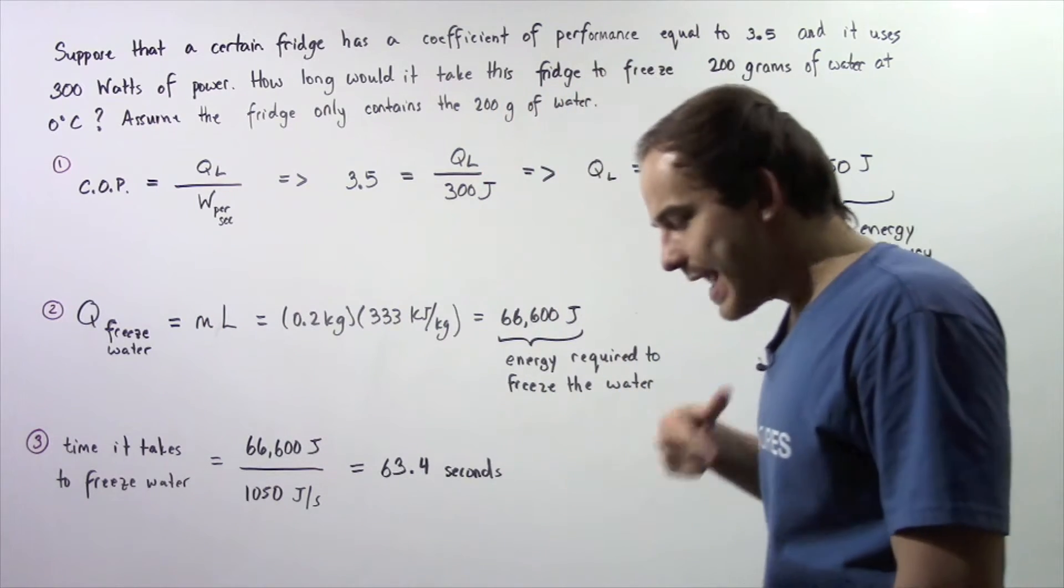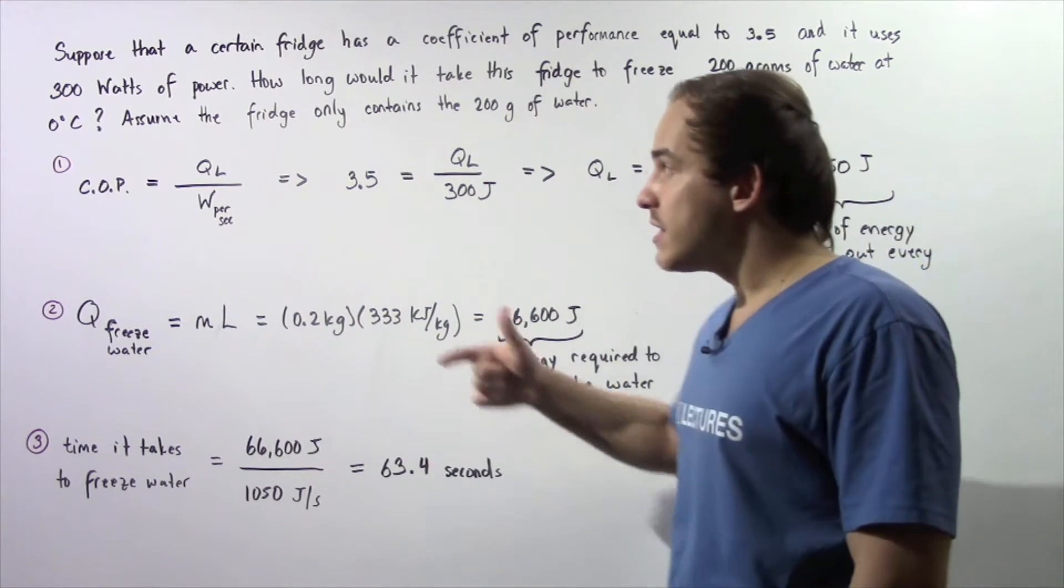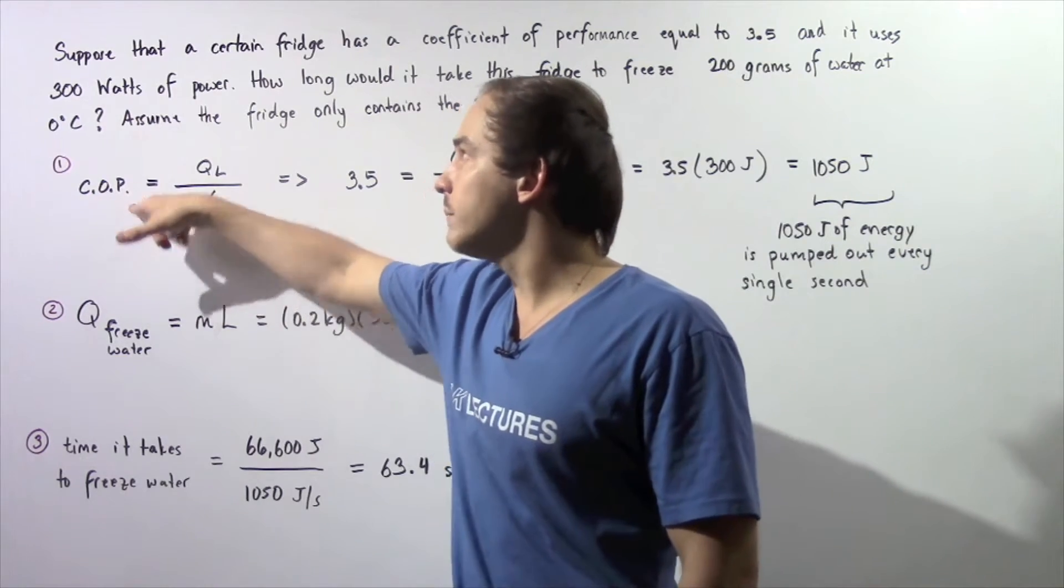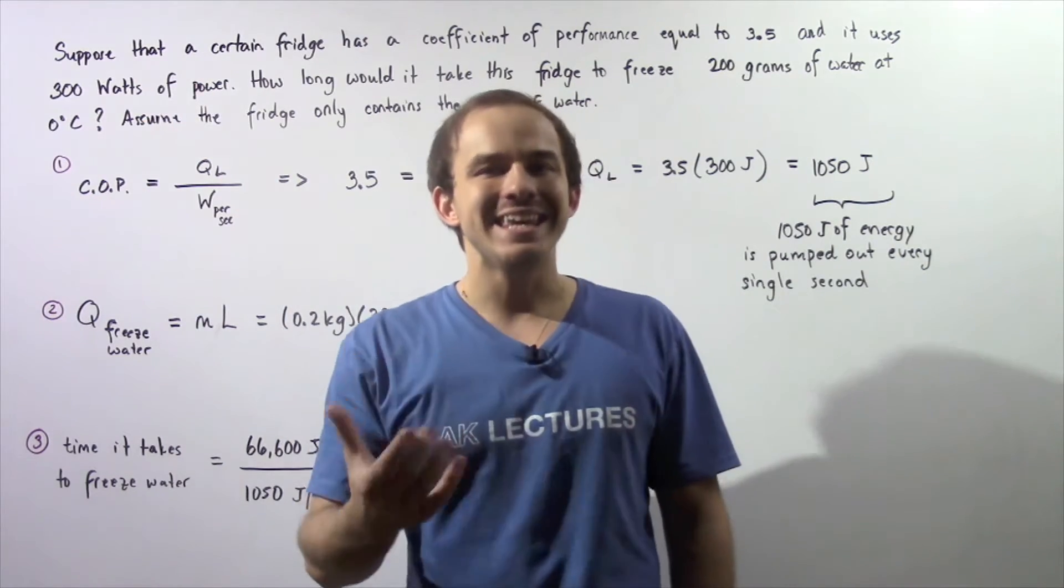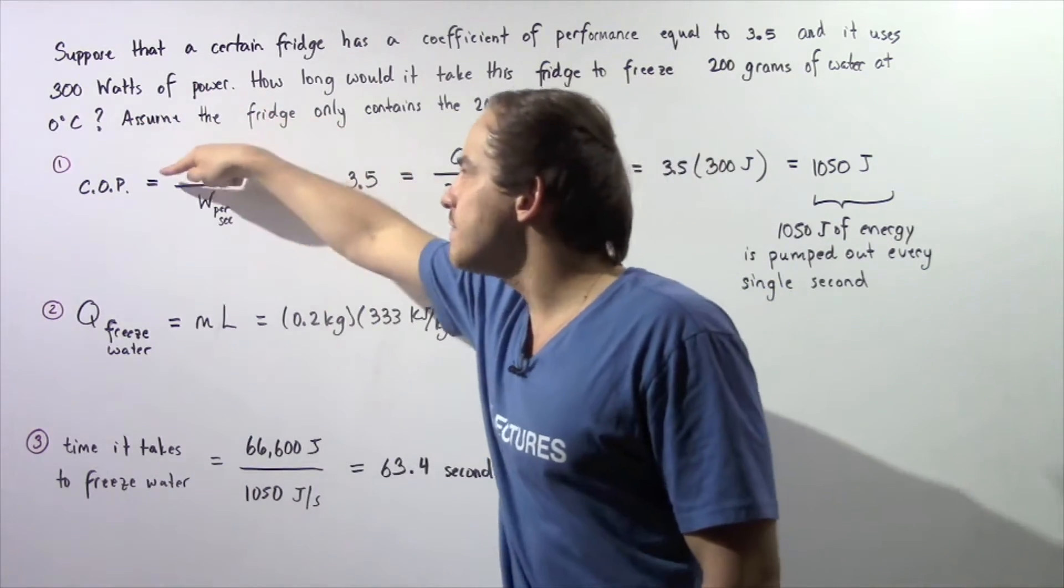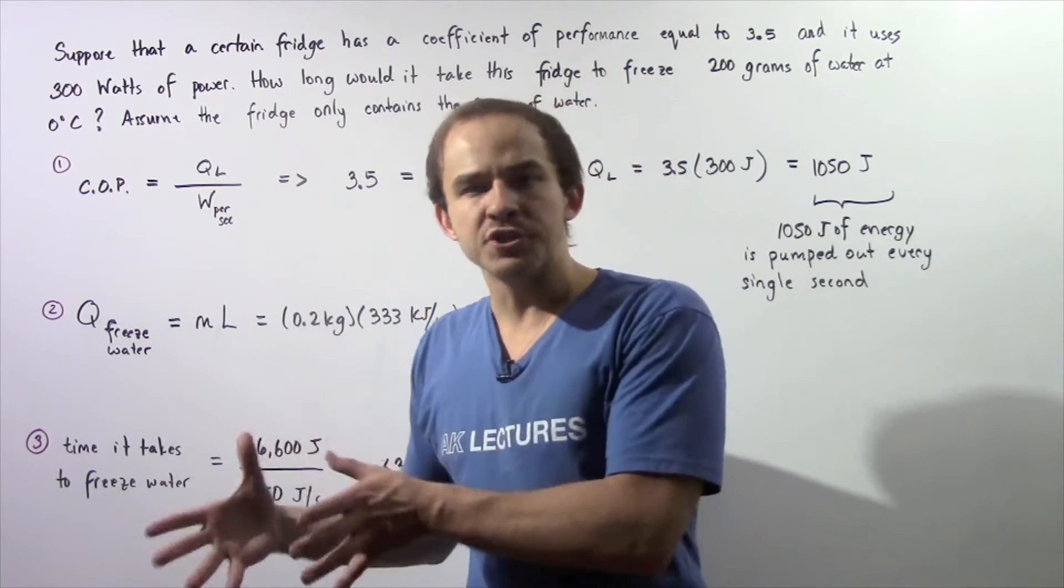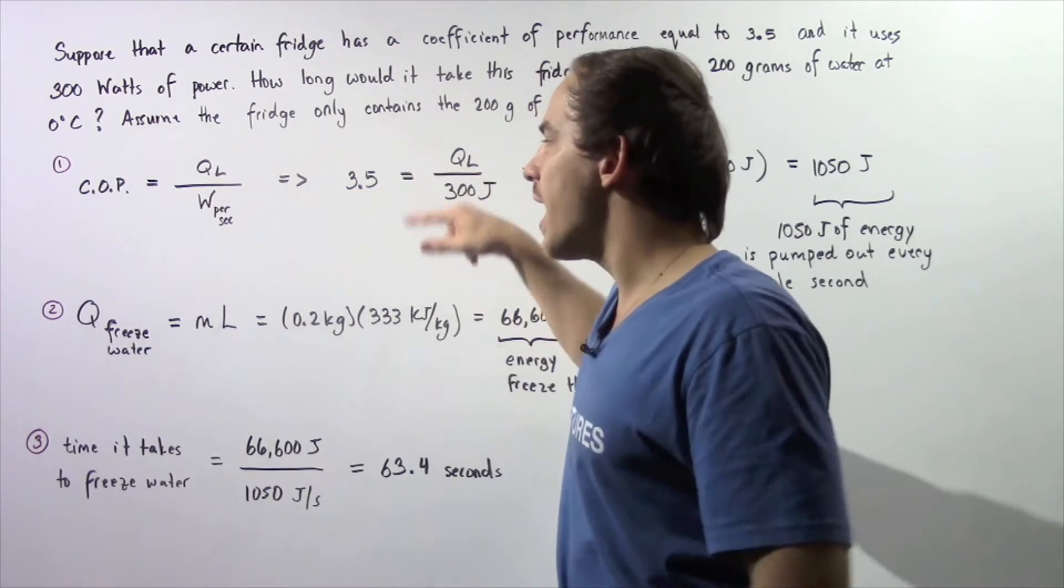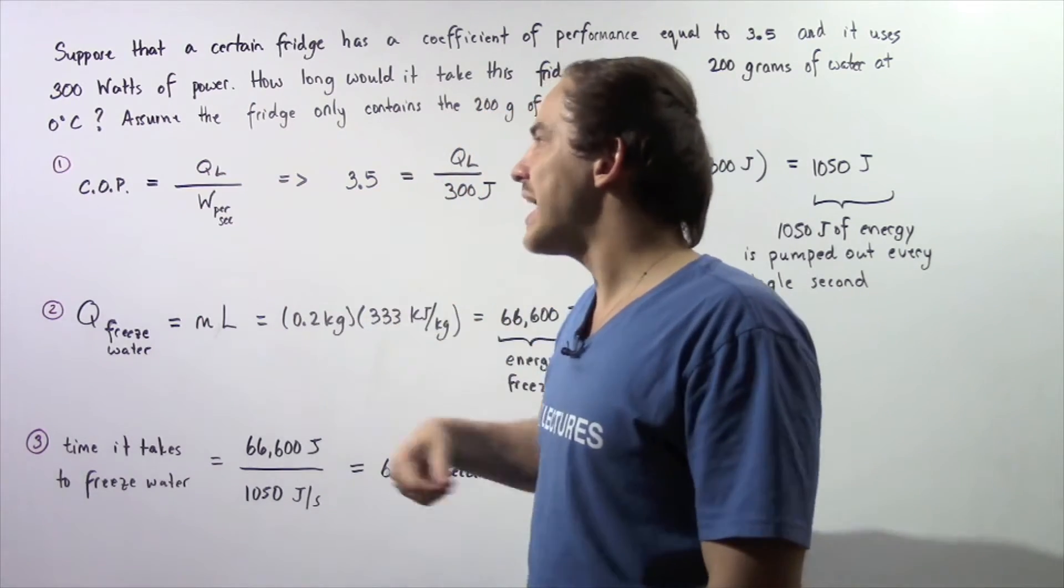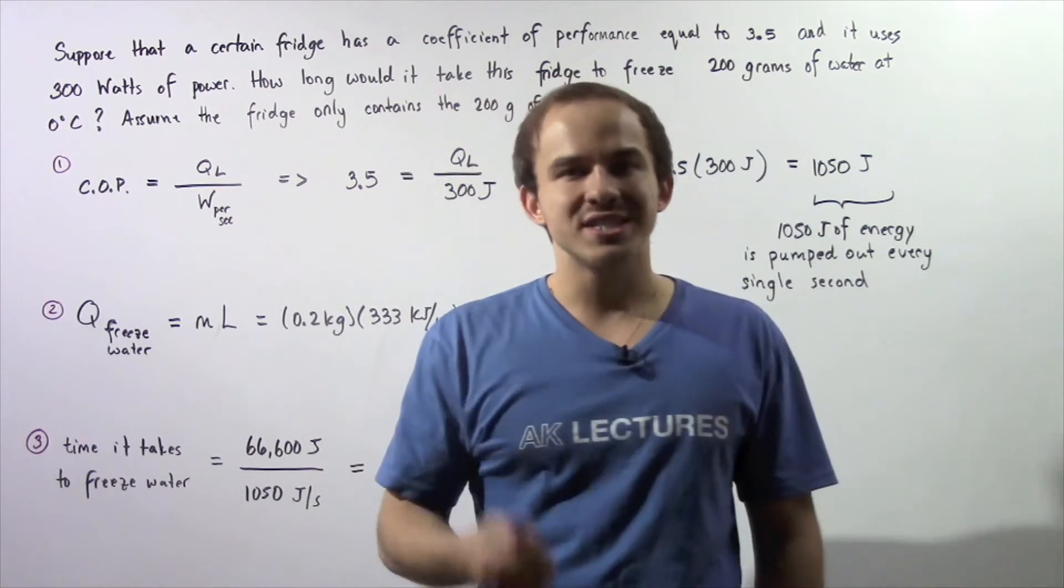So let's begin with step 1. In step 1, recall that the coefficient of performance of our fridge is equal to the amount of energy that is released or taken out of our fridge per second divided by the amount of work that the fridge requires per second.